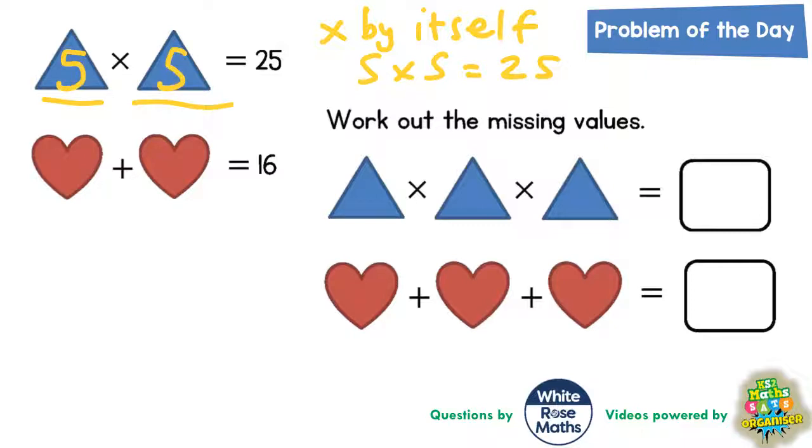So if those triangles are 5 each, it's a good idea to write the 5s on the other triangles because all the triangles must be the same. So if those triangles are 5, then the three triangles down here must also be 5.